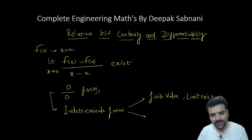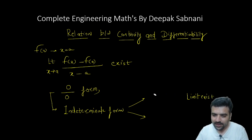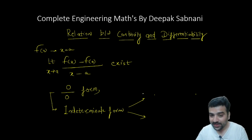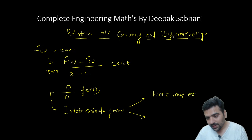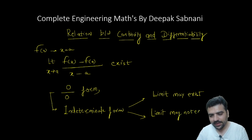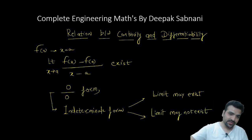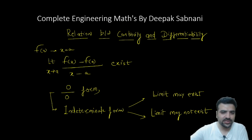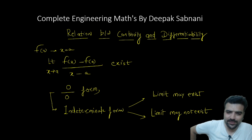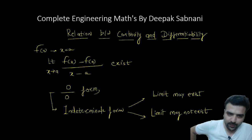Or it may not be defined — the limit may not exist. For indeterminate cases we have seen problems where the limit exists and problems where it does not. So there are functions which are differentiable and functions which are not. For example, sin x is differentiable everywhere, but mod x is not differentiable at x equal to 0 because the limit does not exist.